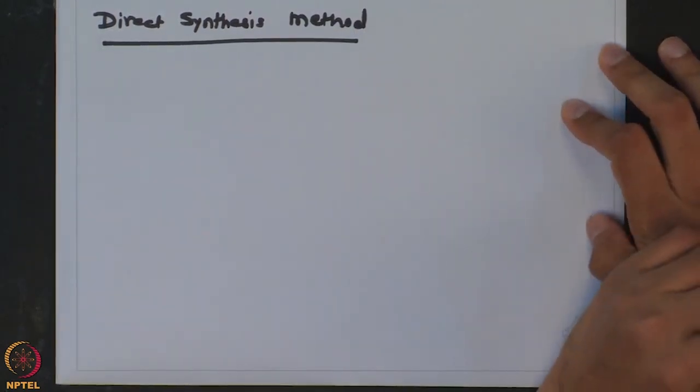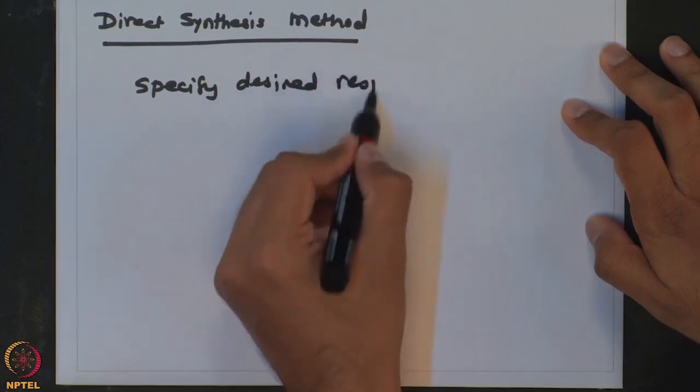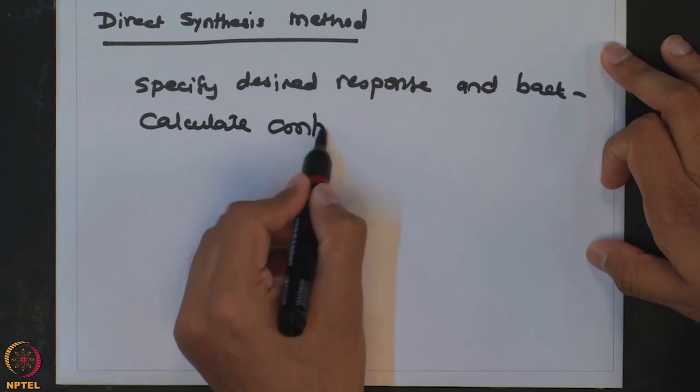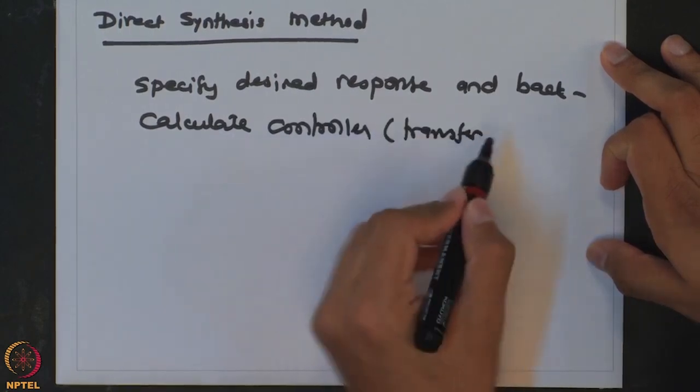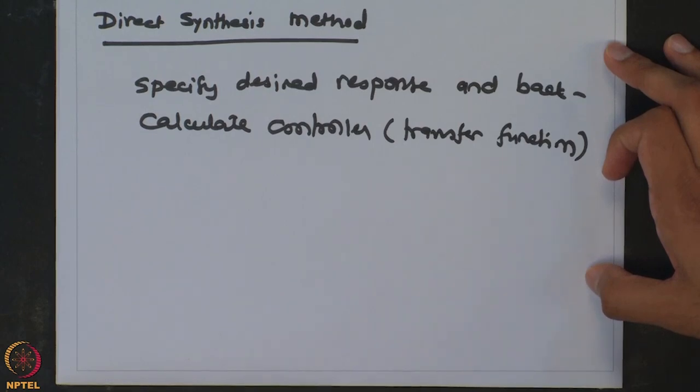As the name of the method suggests, it is a direct synthesis method. What we mean by that is here we specify a desired response and back calculate the controller transfer function. If you want to distinguish this method from previous methods of heuristic tuning or criteria based tuning — in both those methods we essentially select certain controller parameters so that they will give us certain properties of the response. Here, we actually specify the response, which can satisfy some performance criteria, and then we back calculate what controller will give us that particular closed loop response.